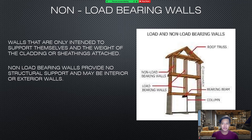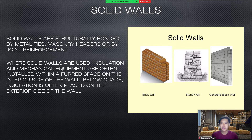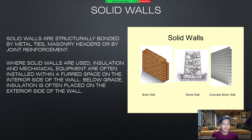Non-load bearing walls are walls that are only intended to support themselves and the weight of the cladding or sheeting attached. Non-load bearing walls provide no structural support and may be interior or exterior walls. Solid walls are structurally bonded by metal ties, masonry headers, or by joint reinforcement. Where solid walls are used, insulation and mechanical equipment are often installed within a furred space on the interior side of the wall. Below grade, insulation is often placed on the exterior side of the wall. There are three types of solid walls: brick wall, stone wall, and a concrete block wall.